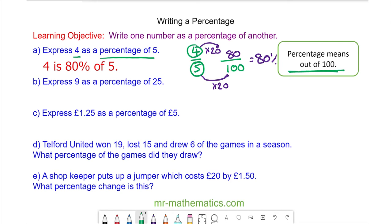For question B we're going to express 9 as a percentage of 25. So we're going to write 25 as our denominator. Out of the 25 we have 9, and again percentage means a fraction of 100.